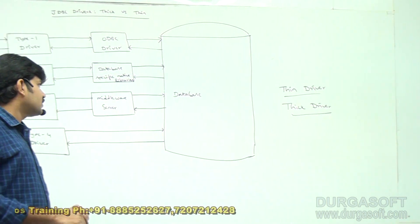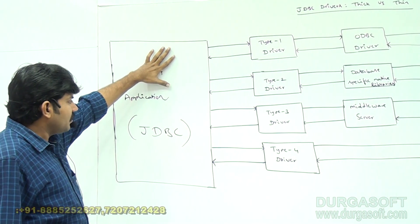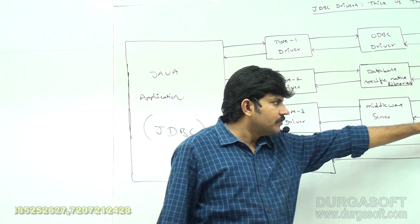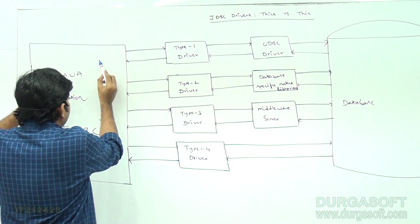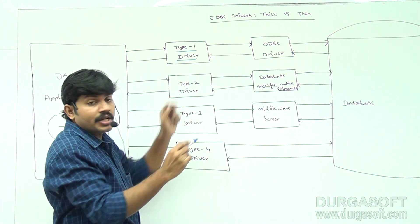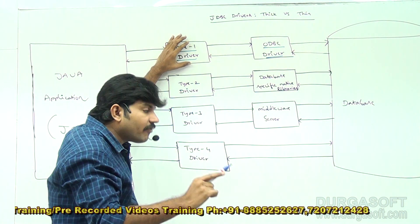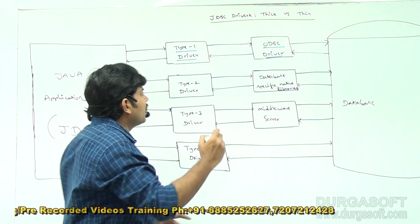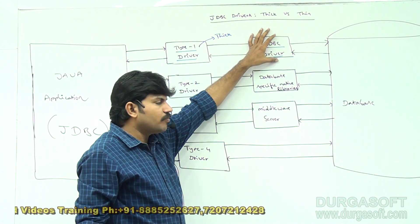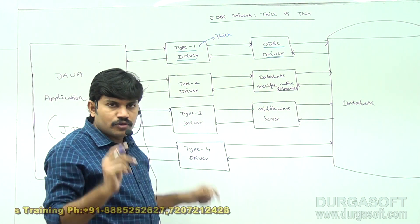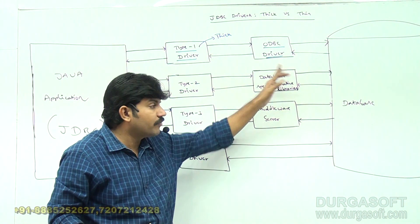Just have a look at this diagram. This is my Java application which internally uses JDBC, and this is my database. If it is a Type 1 driver, the Java application communicates with the Type 1 driver, the Type 1 driver communicates with ODBC driver, which is going to communicate with the database. So Type 1 driver requires ODBC driver to communicate with the database — that's why this driver is a thick driver. Without extra component support, it can't communicate with the database.